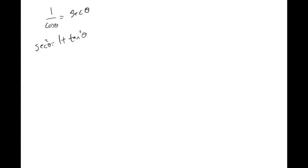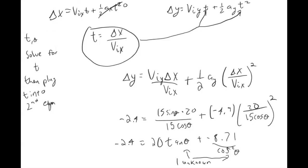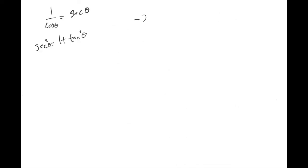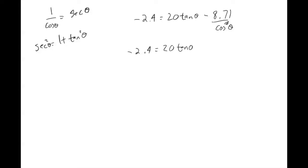Looking at our equation: negative 2.4 equals 20 tangent theta minus 8.71 over cosine squared theta. I'm going to use that first relationship to turn 1 over cosine squared theta into secant squared theta. So: negative 2.4 equals 20 tangent theta minus 8.71 secant squared theta.